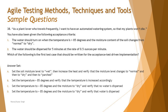This blends with acceptance test driven development, where test cases are derived from acceptance criteria. Option A says: set the soil moisture level to wet, then increase the heat and verify that the moisture level changes to normal, then to dry, then to parched. This is problematic because moisture is not the only constraint — the acceptance criteria combines two conditions: temperature and moisture together.